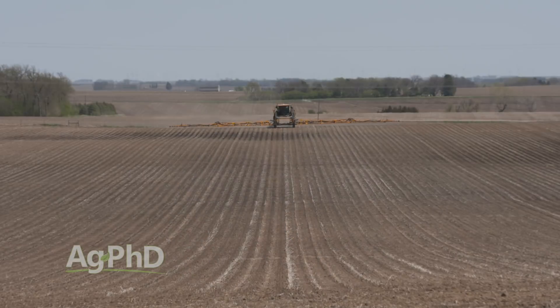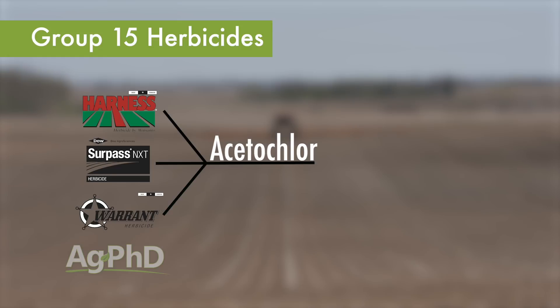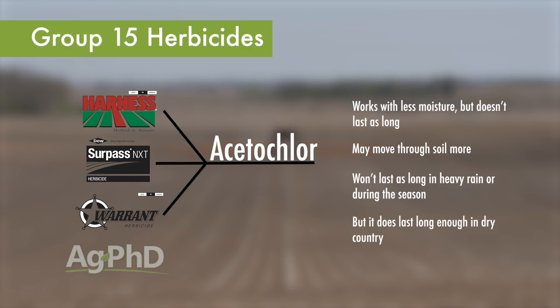The question is: what's the difference between all these Group 15 products? The biggest difference is when you look at Harness, Surpass, and Warrant — they're all acetochlor. Acetochlor appears to work with a lot less moisture, but it doesn't last as long. It may move through the soil a little more and won't last as long in heavy rain or through the full season. But in dry country where we farm, it's fine — it lasts plenty long enough. What we've seen from Zidua is that it holds longer — it takes a little more moisture to get activated, but it holds a lot longer in heavy rain conditions.